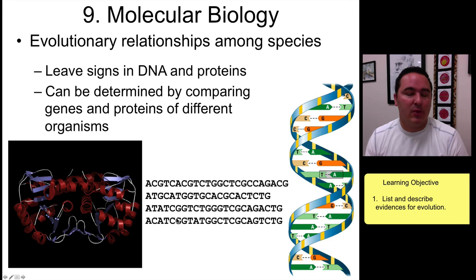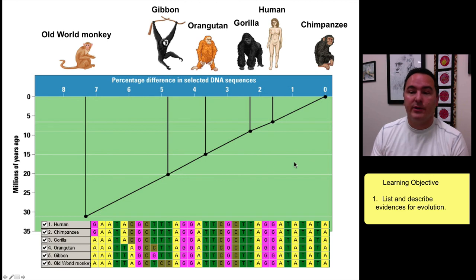Number nine: molecular biology. This is a very powerful evidence of evolution. This is where you take the DNA sequences and compare them organism by organism. As we've done this, we see that chimpanzees and humans share 98.5% of all of their DNA nucleotides. There are a little bit more differences with gorillas and orangutans and gibbons. Remember that most of our DNA is not even used for coding.